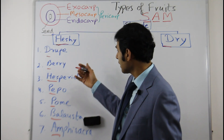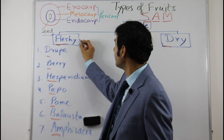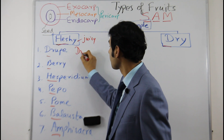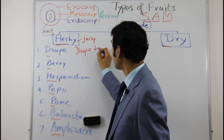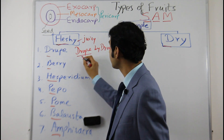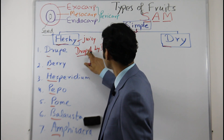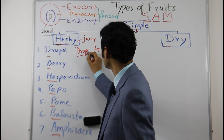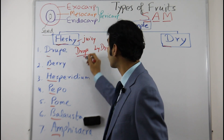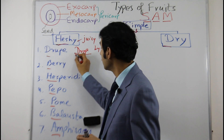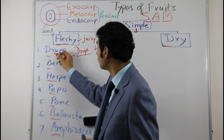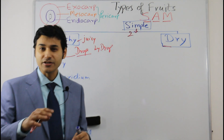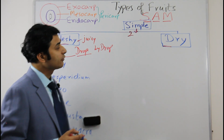I gave you a clue that fleshy means juicy — the juice will be coming out drop by drop. So 'drop' is your clue to remember 'drupe.' All the details and examples of fleshy fruits are mentioned in the previous videos. Now let us come to the dry types.